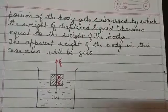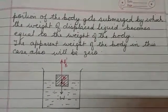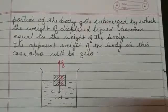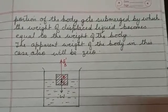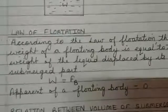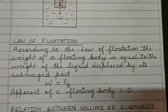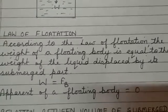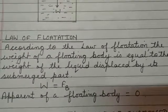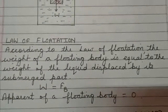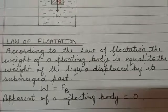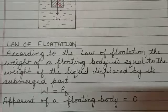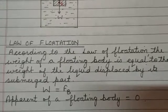Based on this, we focus on the law of flotation, which is a very important law. According to the law of flotation, the weight of a floating body is equal to the weight of the liquid displaced by its submerged part — meaning W equals Fb. The apparent weight of a floating body will always be zero.